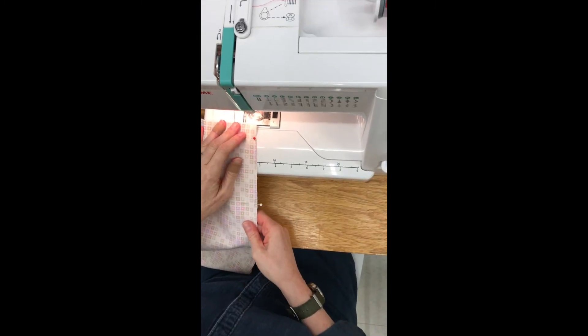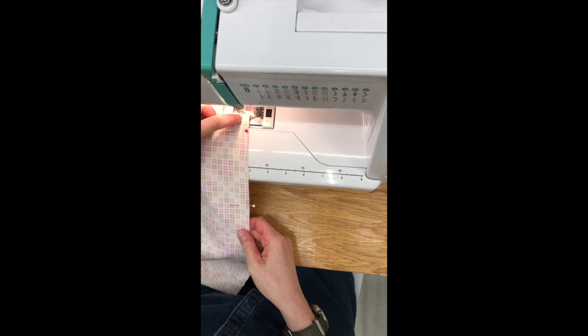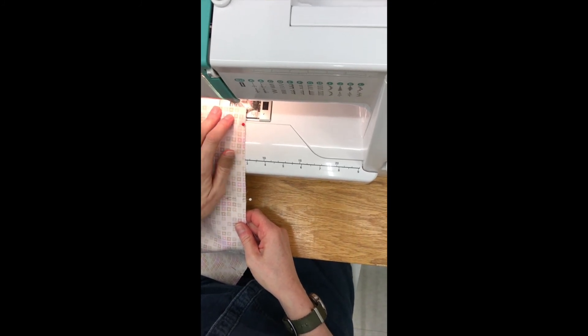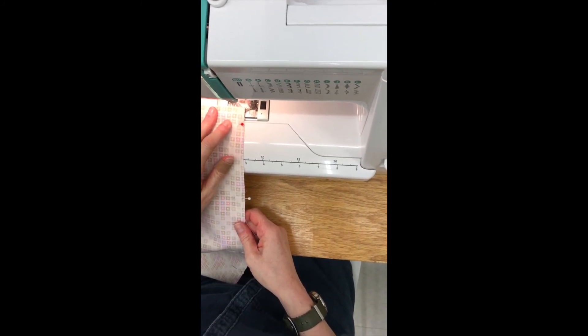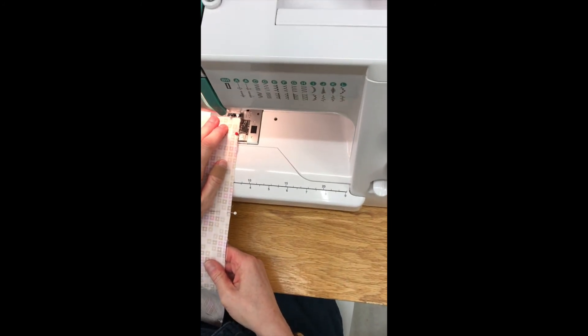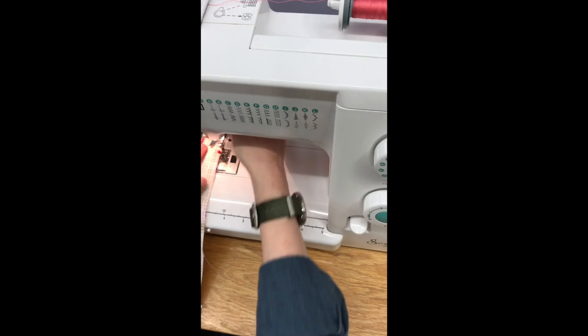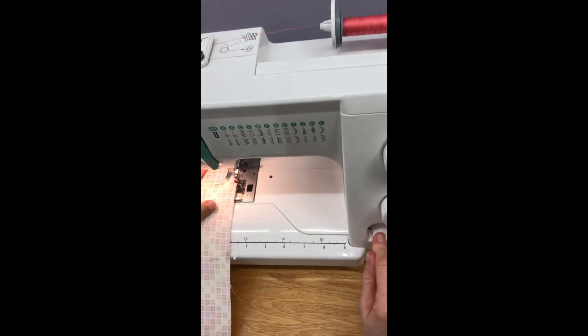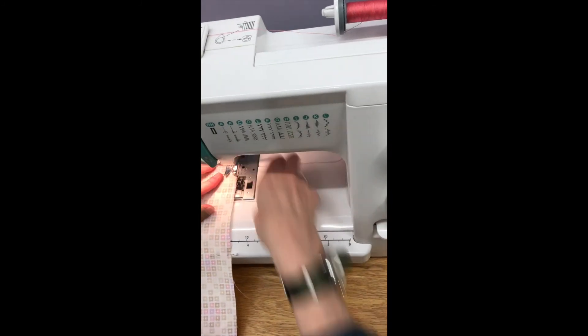The next step is that you're going to sew a straight stitch where you pinned and your seam allowance is 3/8 of an inch. Whenever you start and stop a straight stitch, you always want to make sure that you backstitch. And don't sew over a pin.